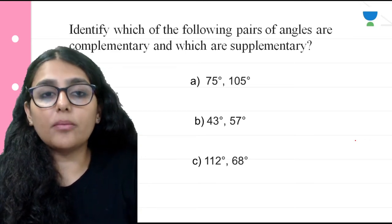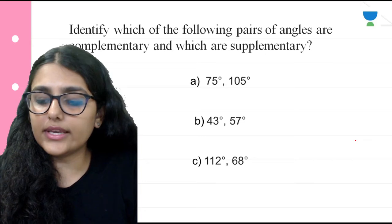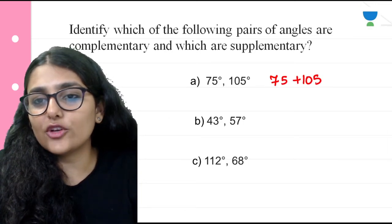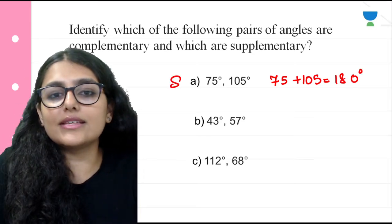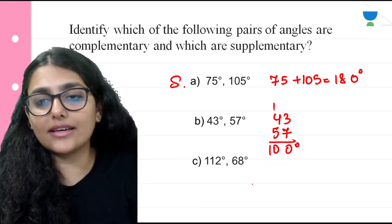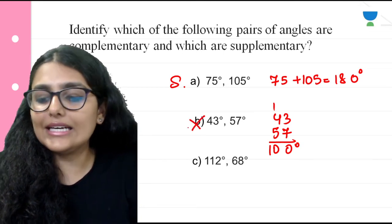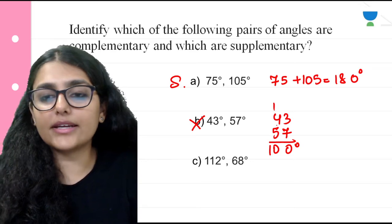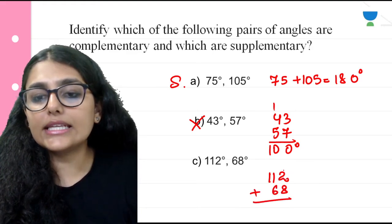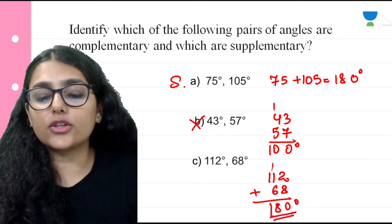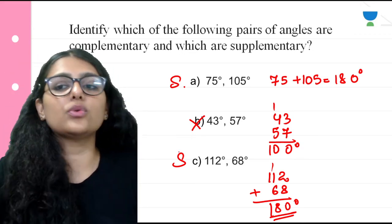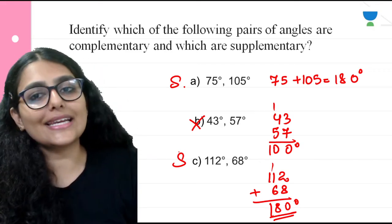Identify which of the following pairs of angles are complementary and which are supplementary. We add them and see what their sum is. 75 plus 105 gives 180 degrees — these are supplementary angles. Then 43 and 57: that becomes 100 degrees, which is neither complementary nor supplementary. Next, 112 and 68: 8, 10, 6, 8 — this is 180 degrees, so this is also a pair of supplementary angles.